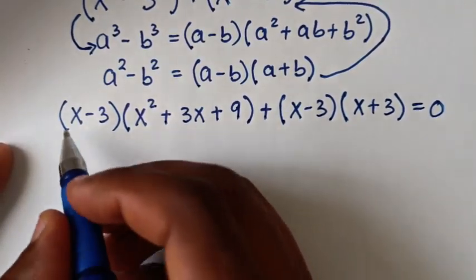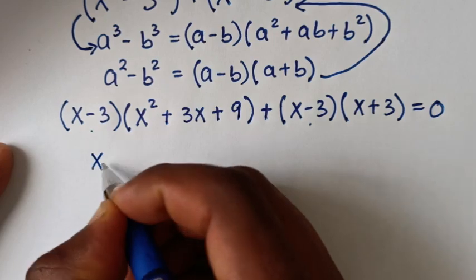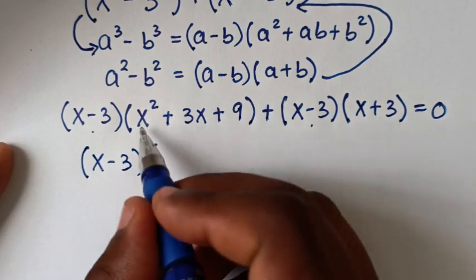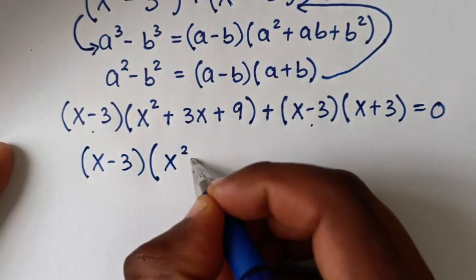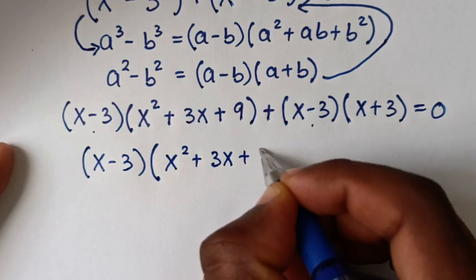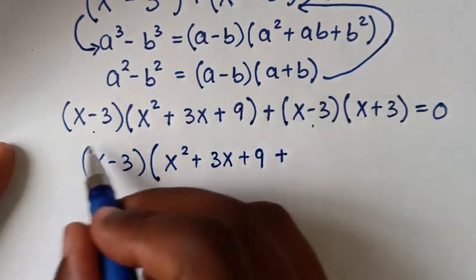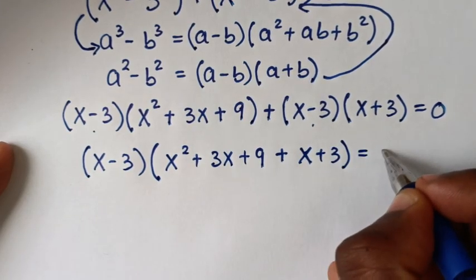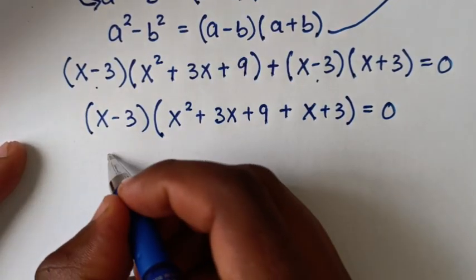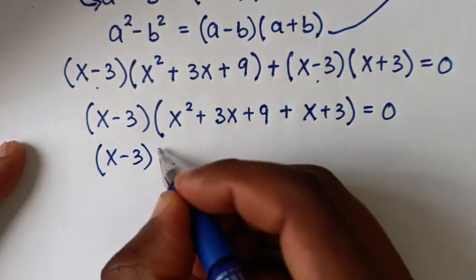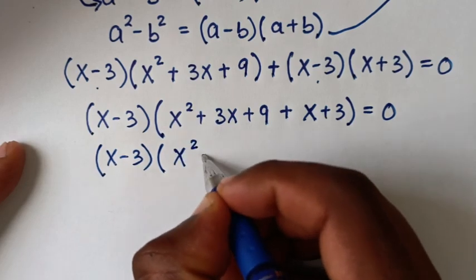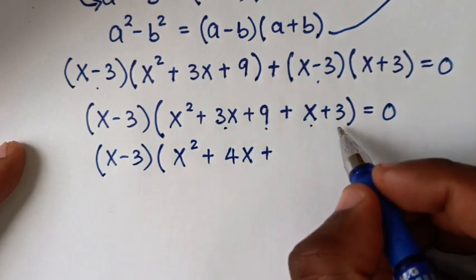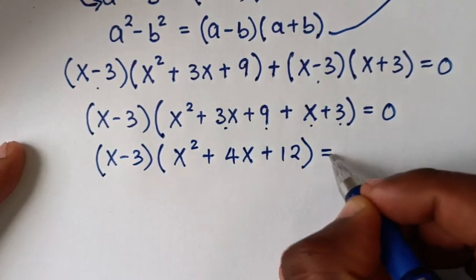Then in the next step, from here, x minus 3 is common, so we'll take x minus 3 out of the bracket. This gives x squared plus 3x plus 9, then plus x plus 3, bracket, is equal to 0. Then in the next step, it will be x minus 3 bracket, bracket, x squared plus 3x plus x is 4x, plus 9 plus 3 is 12, bracket, is equal to 0.